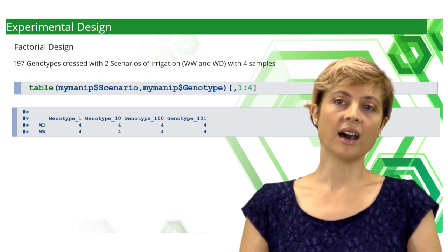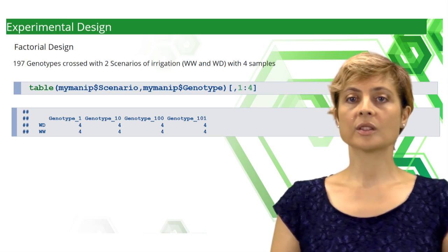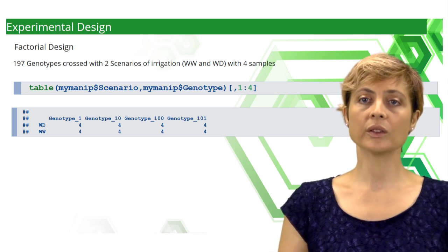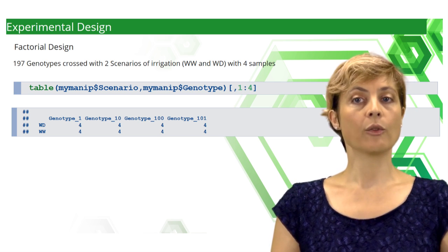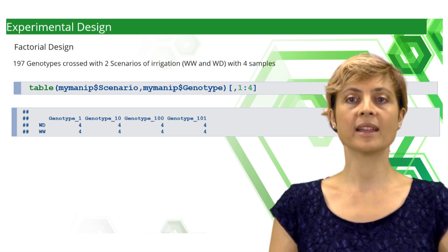My command on R. The command table summarizes the data into a contingency table which crosses the two factors, genotype and scenario, of our current data frame mymanip.